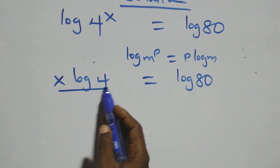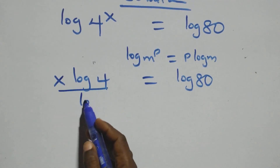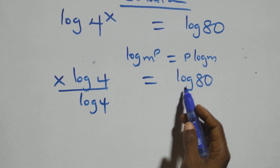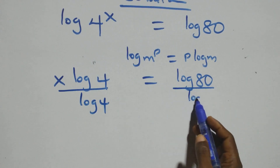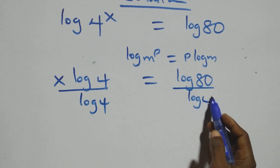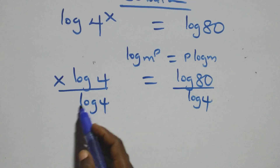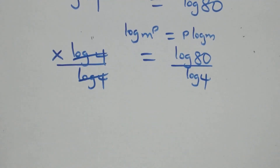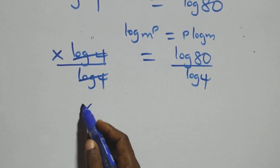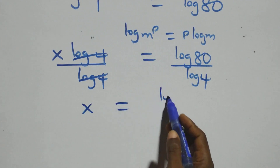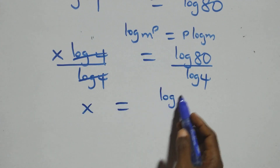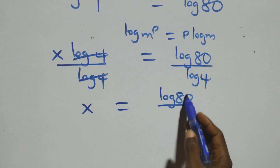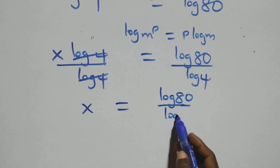The next step: divide both sides by log 4. Divide this side by log 4, and also divide this side by log 4. Log 4 cancels each other, and we have x equals to log 80 over log 4.